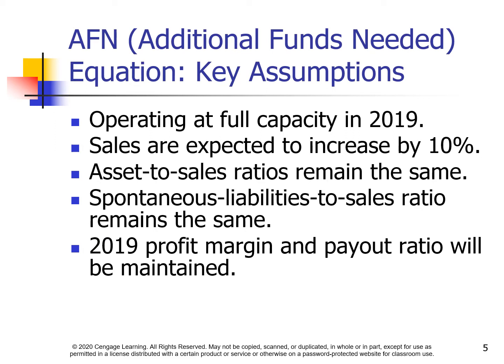Key assumptions for the Additional Funds Needed Equation: the firm is operating at full capacity in 2019; sales are expected to increase by 10%; the asset-to-sales ratio remains the same; the spontaneous liability-to-sales ratio remains the same; and the 2019 profit margin and payout ratio will be maintained.